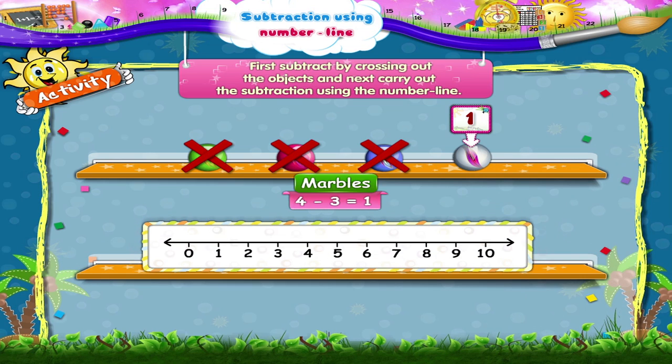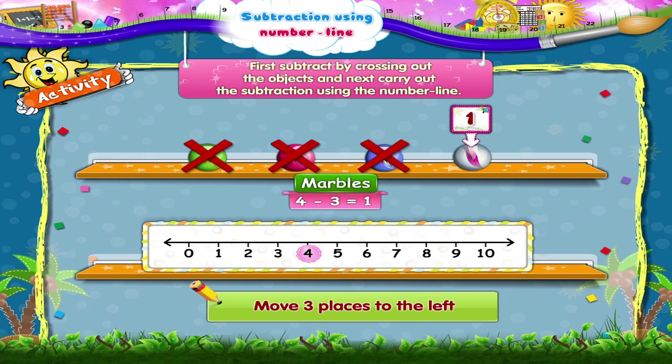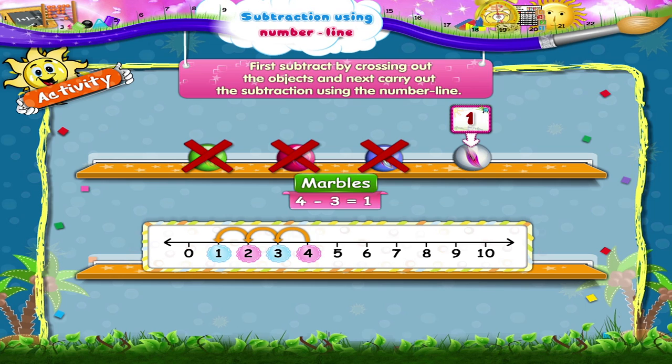Now using the number line, start at four. Move three places to the left. One, two, three. We reach the number one. So four minus three equals one.